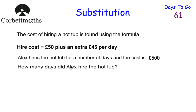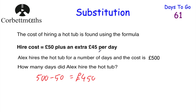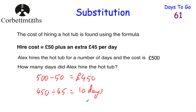We have two approaches: work backwards or form an equation. Working backwards: take £500 and subtract the £50 fixed charge to get £450. Then divide by £45 per day — 450 divided by 45 equals 10. So the hot tub was hired for 10 days. Let's check: 10 days at £45 per day is £450, plus £50 equals £500. Correct!